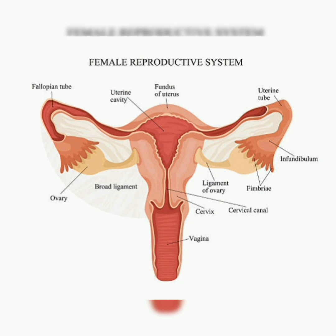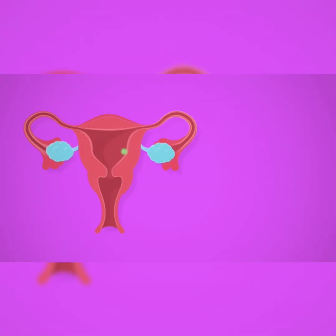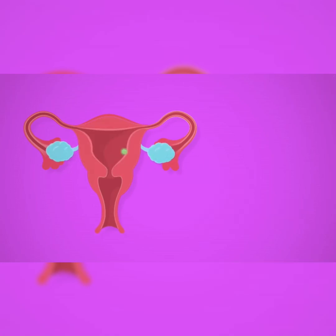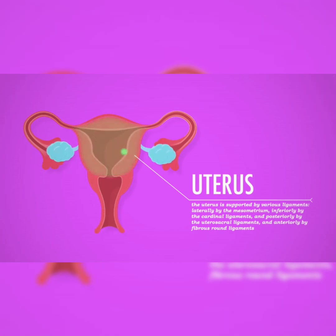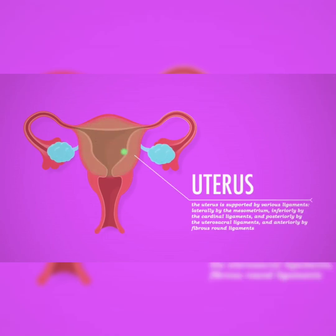The cervix opens to allow a baby to come out during vaginal childbirth, and it is what prevents objects like tampons from getting lost inside the body. The uterus is a hollow, pear-shaped organ that holds a fetus during pregnancy. The uterus is divided into two parts: the cervix and the corpus. The corpus is the larger part of the uterus that expands during pregnancy.